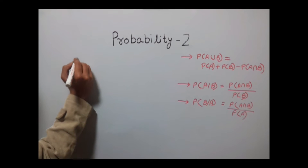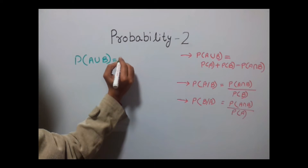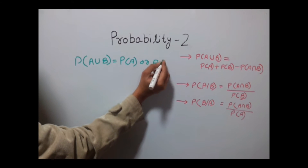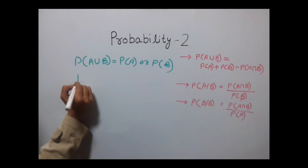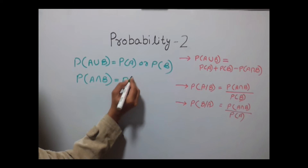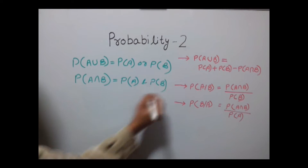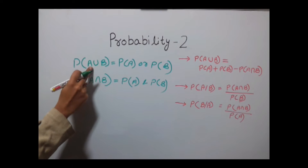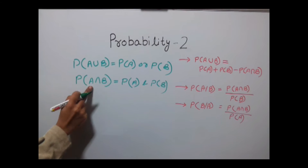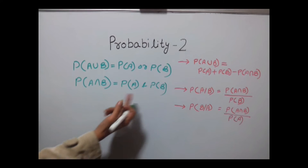Probability of A union B means probability of A or probability of B. Probability of A intersection B means probability of A and probability of B. So probability of A union B means either A will occur or B will occur, and probability of A intersection B means both A and B will occur simultaneously.